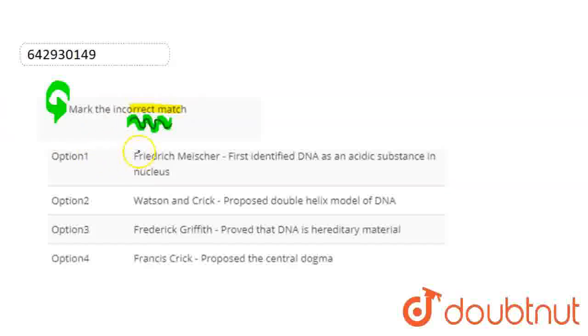We will start with the first one, which is Frederick Meischer first identified DNA as an acidic substance in the nucleus. So this match is completely correct, because in 1868, Frederick Meischer firstly identified DNA as an acidic substance in the nucleus.